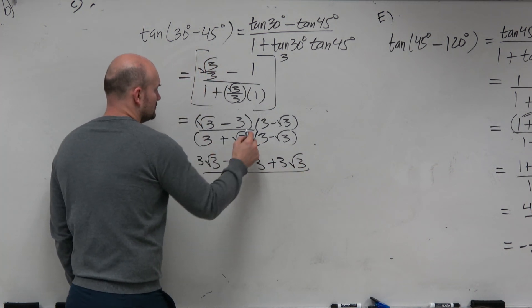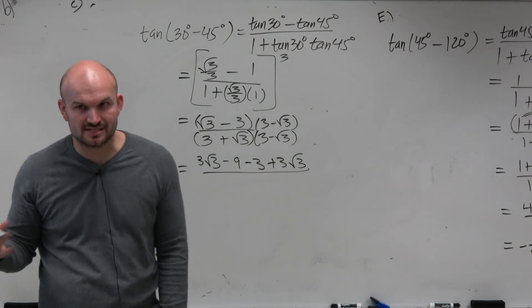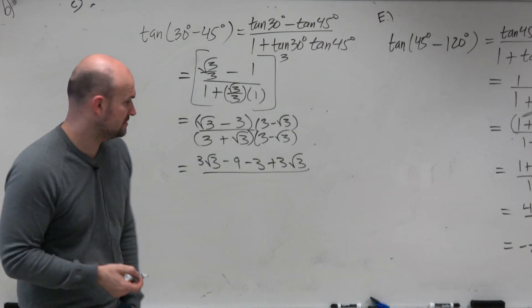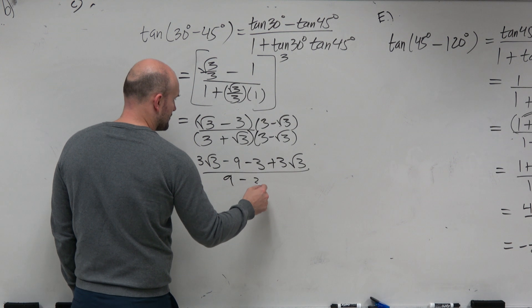And then the denominator, the nice thing, again, guys, about rationalizing, that's going to give you the difference of two squares, right? So this is 9 minus 3.